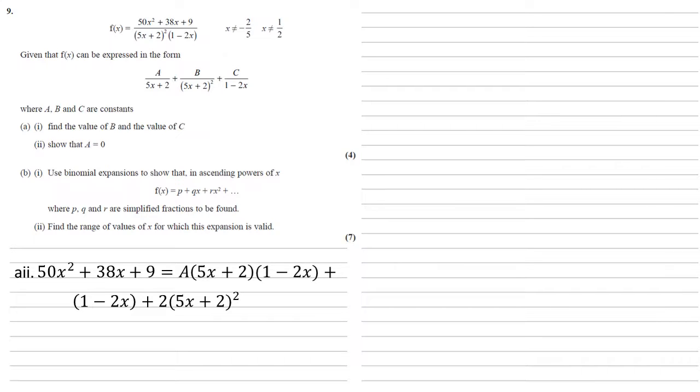Using the beginning of the last part we know that 50x squared plus 38x plus 9 is equal to a times 5x plus 2 and 1 minus 2x plus 1 minus 2x plus 2 lots of 5x plus 2 all squared.